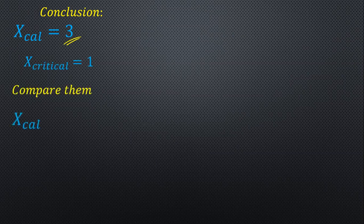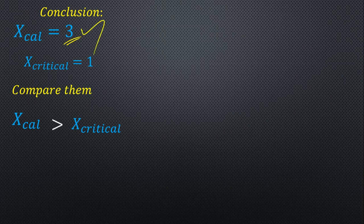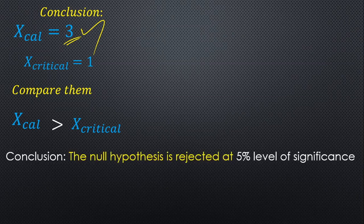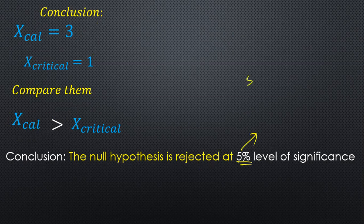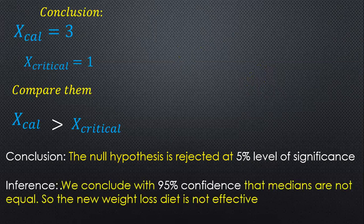Comparing: x calculated value is three and x critical value is one. The x calculated value is greater than the x critical value. Therefore, the null hypothesis is rejected at the 5% level of significance. The confidence level is 100 minus 5, which equals 95%. We conclude with 95% confidence that the medians are not equal.